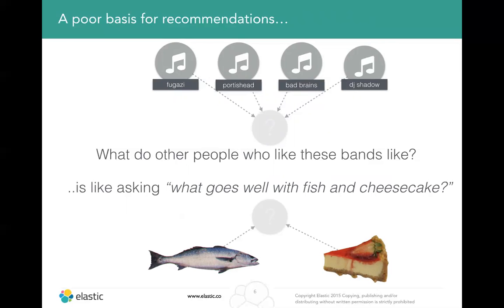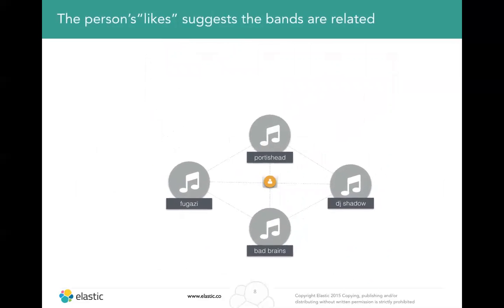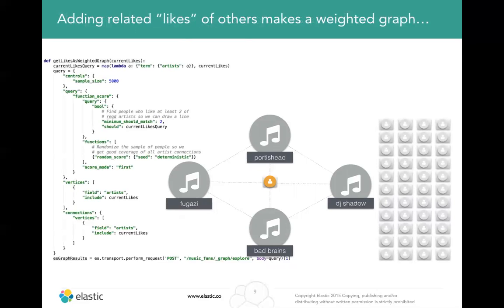This is really what this presentation is about, and we'll get to some code examples in a minute. Let's rethink this flat list and consider it as a graph. We can take this one document from one user, with his list of likes, and conceptually organise them as a graph. This one document suggests all of these bands are somewhat related, but right now we don't have a lot of evidence. What would be ideal is to consider the opinions of other people to fill in the connections — and this is something we can do using the Graph API.